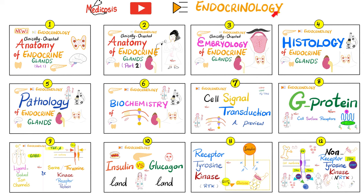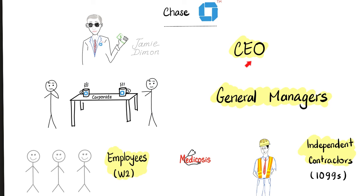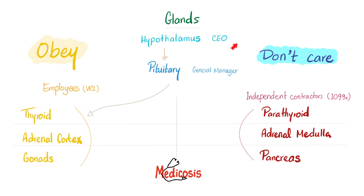If you are a pro, check out my endocrinology playlist. The CEO gives commands to the general managers, which gives commands to the employees, which have to listen to the manager. Others don't listen to the manager — these are the independent contractors. The hypothalamus is the CEO. General manager is the pituitary. The employees are the thyroid, adrenal cortex, and gonads — they listen to the pituitary. The independent contractors are parathyroid, adrenal medulla (not cortex), and pancreas. Today, we're talking about one of those employees that has to listen to the boss.